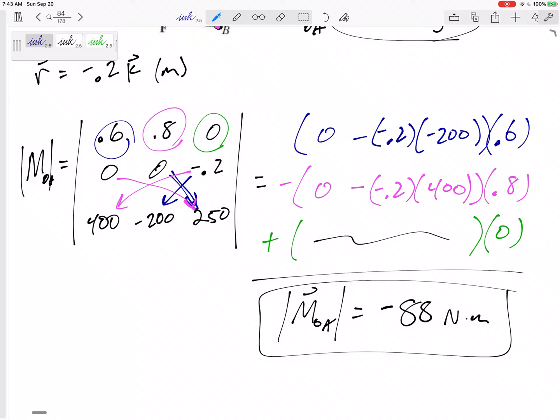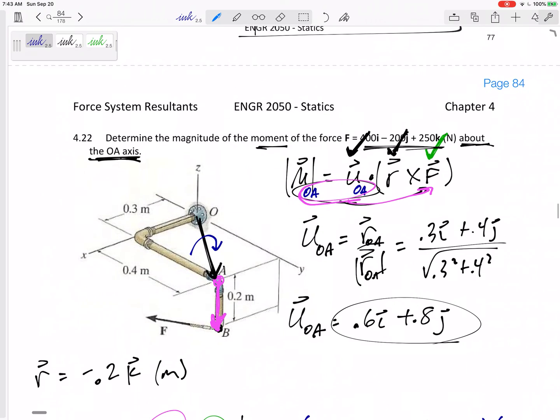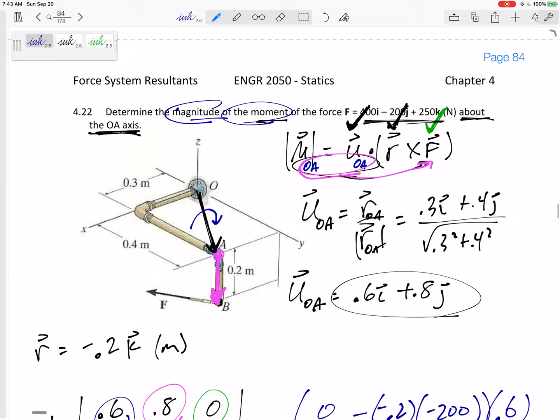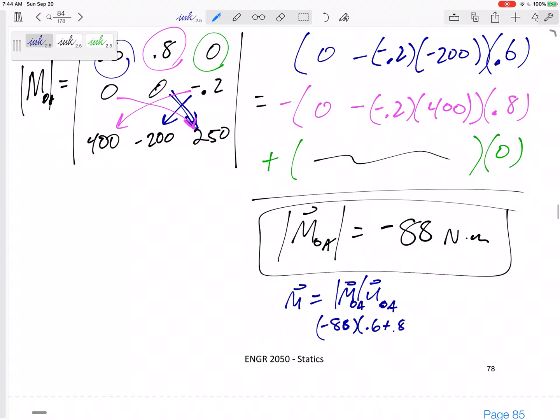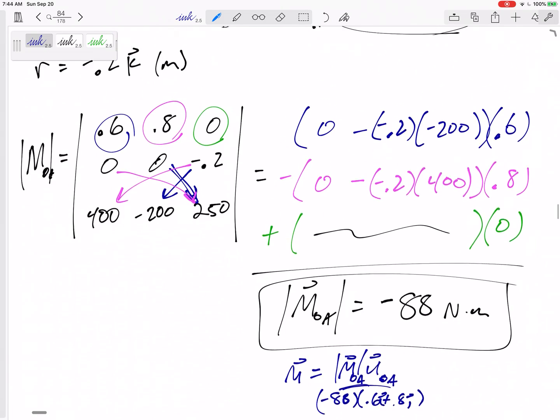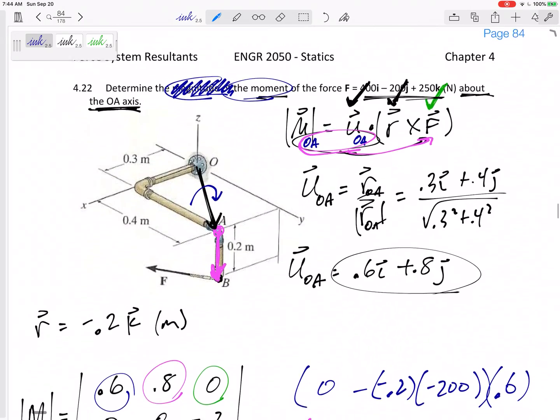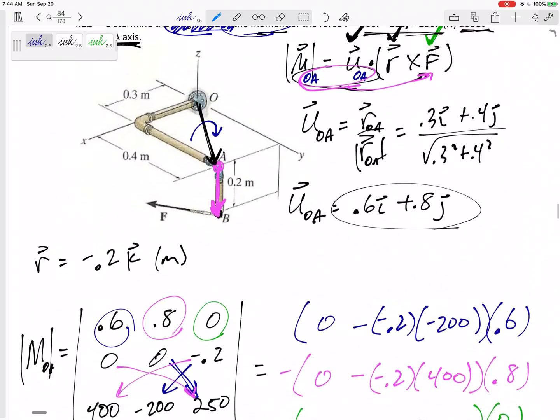Leave it right there, box that in. Leave your negative if it is negative. Let me just go back and double check. This asks for the magnitude of the moment, so I leave it like that. Sometimes if it asks for the moment, then I would have one more step and I would take this magnitude and multiply it times u_OA. I would take this negative 88 and multiply it times 0.6i + 0.8j. But this one doesn't ask for that.